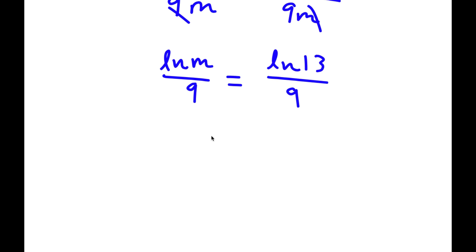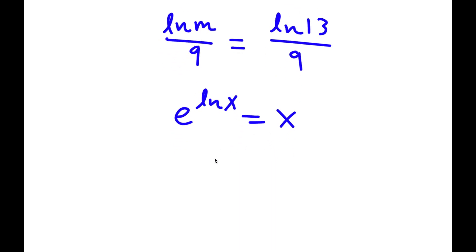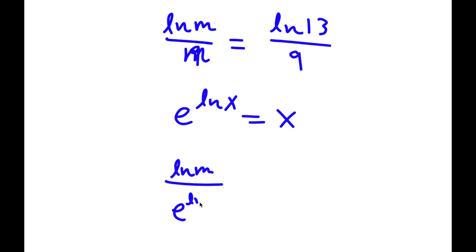Now, since e to the power of ln x equals x, I can express m as e to the power of ln m. So now I have this equals ln 13 over 9, and this is the same thing as ln m times one over e to the power of ln m.